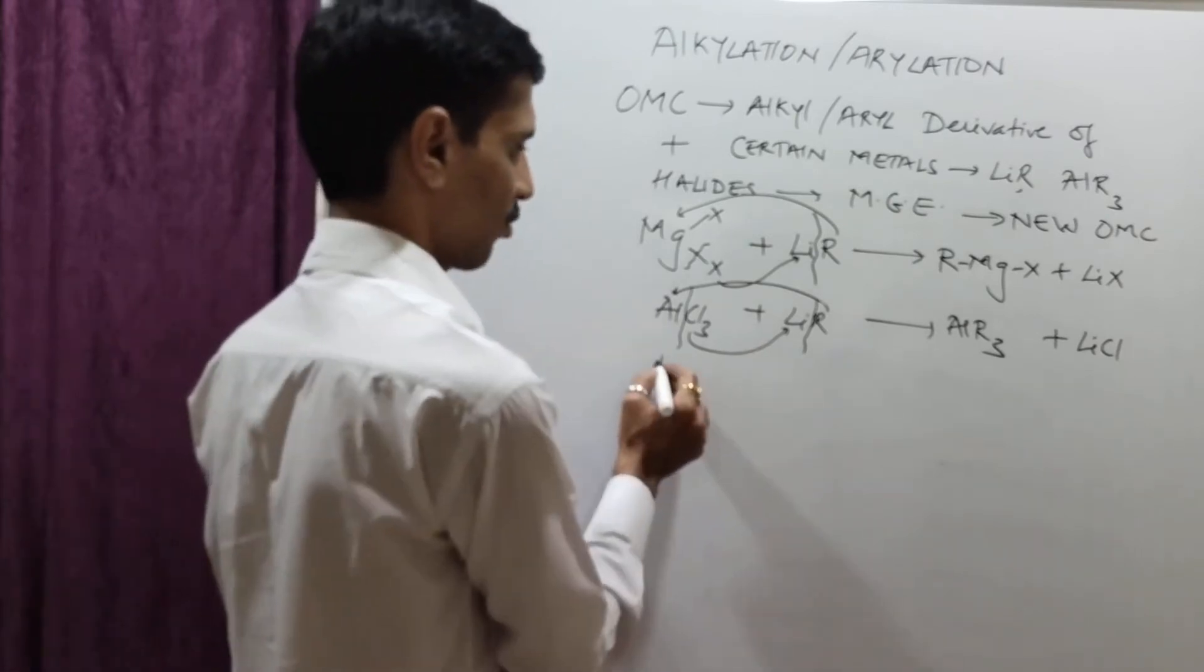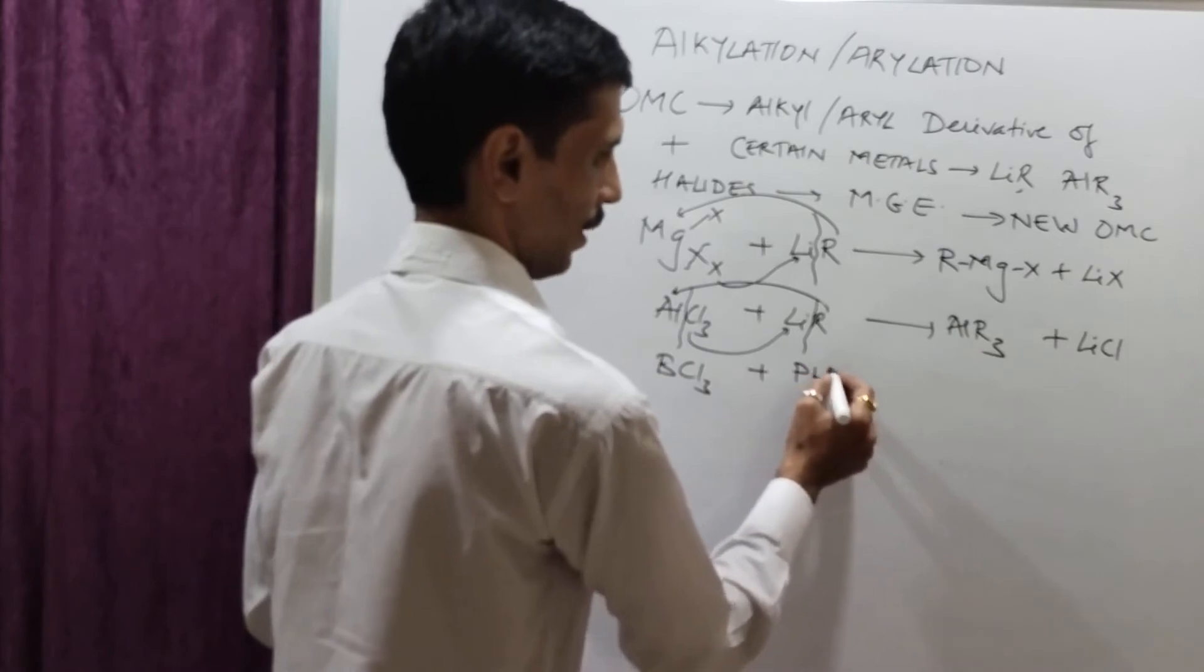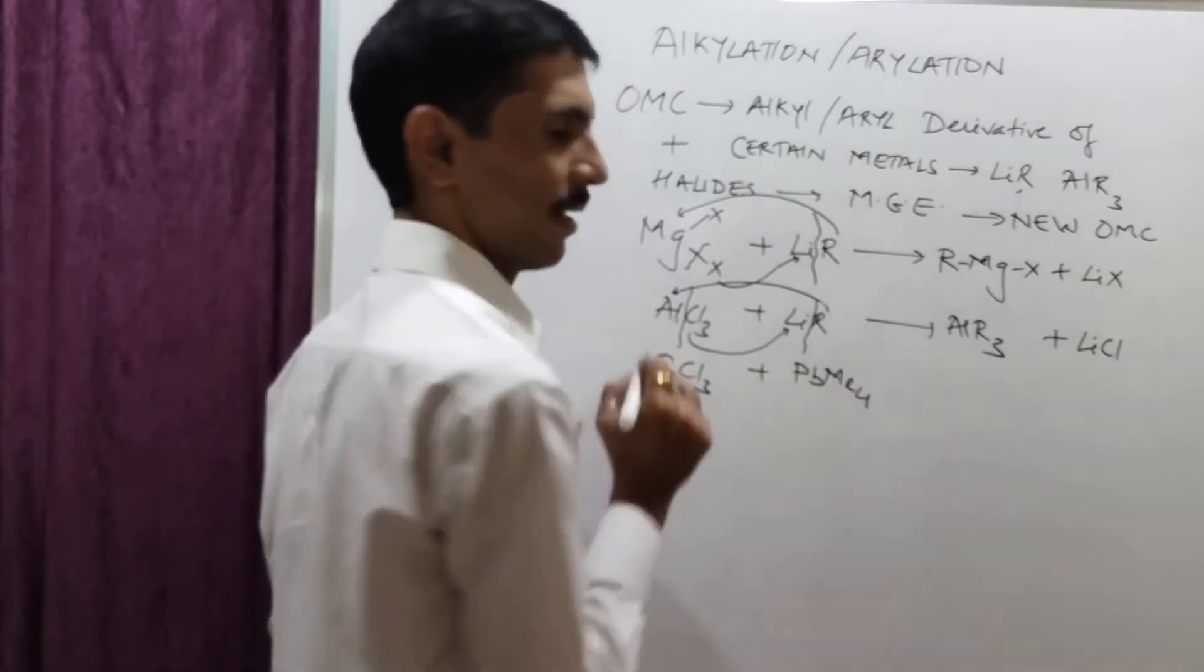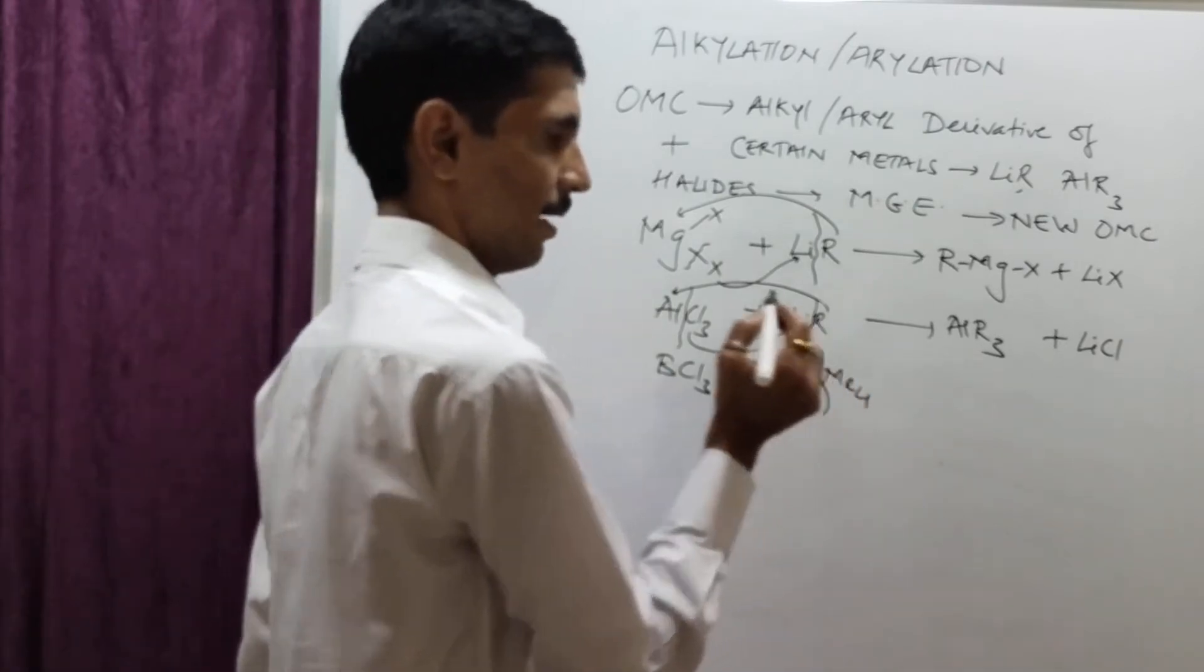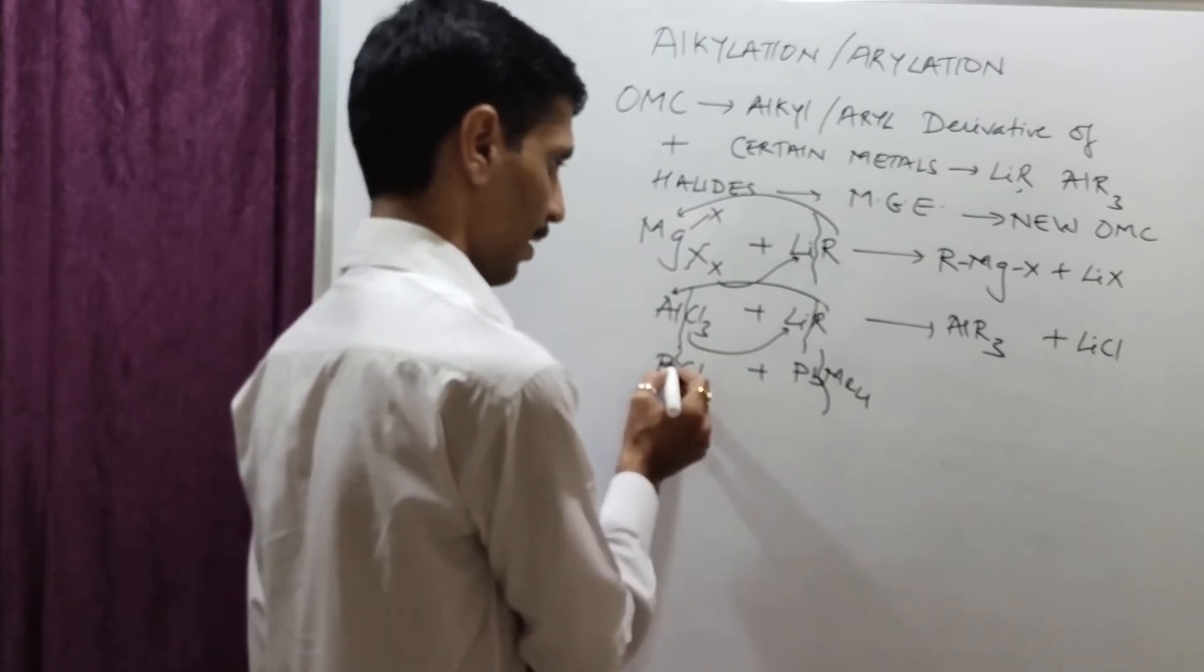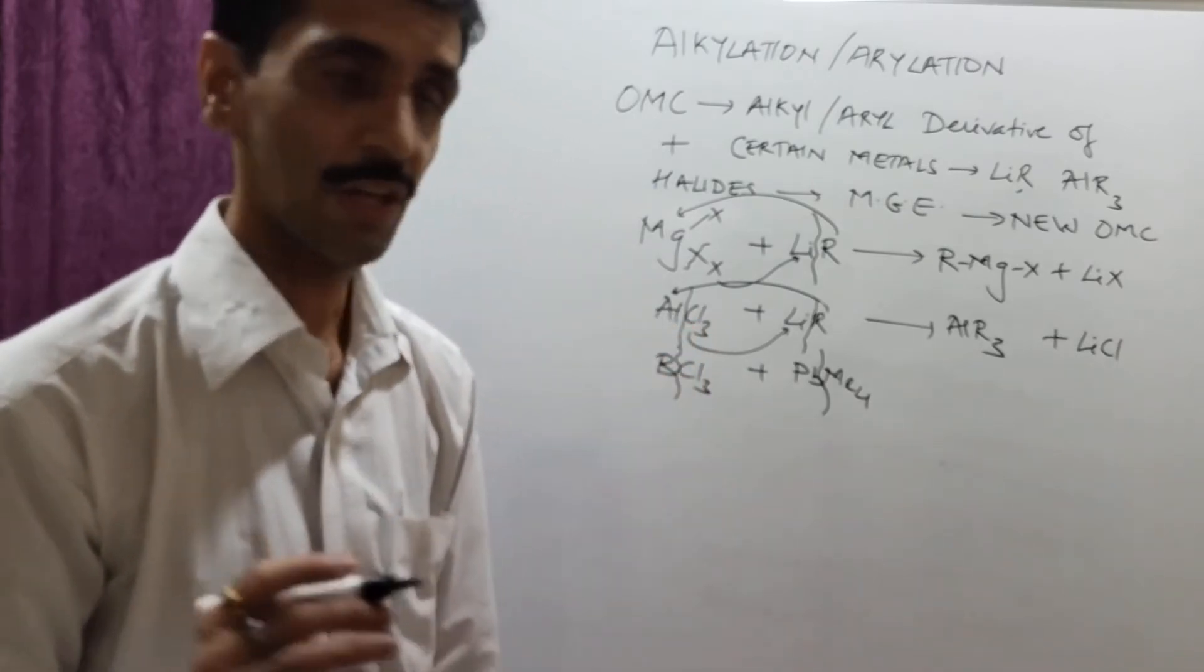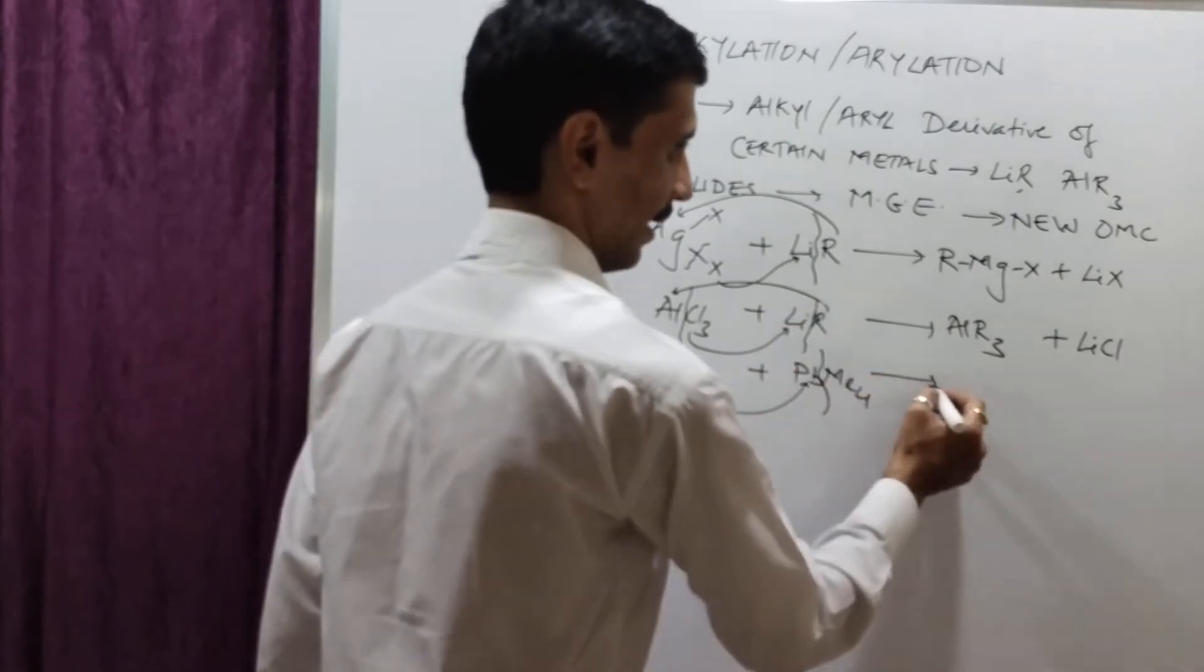Next, another example I'd like to give you is BCl3 being treated with PbMe4, tetramethyl lead. The bond between the lead and the methyl group is going to break. Here, also, it's an example of a complete bond breaking taking place. So, as a result, the Cl will go towards lead.